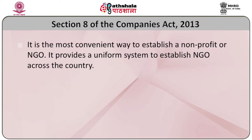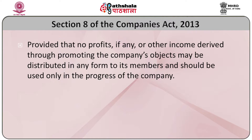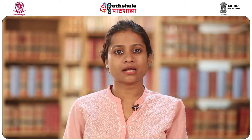The third legal form is Section 8 of the Companies Act 2013, which is the most convenient way to establish a nonprofit or NGO. The biggest advantage is that it provides a unique, uniform system across the entire country. Under Section 8 of the Companies Act 2013, a company with limited liability can be formed for promoting commerce, art, science, religion, charity, or any other useful object. Provided that no profits or other income derived from promoting the company's object may be distributed to its members, and should be used only for the progress of the company. This section also allows such companies not to use the 'private limited' tag after their name.